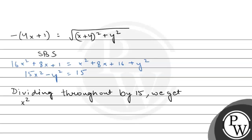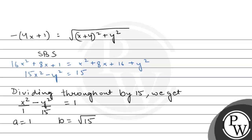Now dividing throughout by 15 we get x²/1 − y²/15 = 1. So 15 and 15 cancel out, giving x²/1 minus y²/15 equals 1. If we check, this is our hyperbola equation where a equals 1 and b equals √15. We have created the hyperbola equation and solved the question. Hope you all understand well — best of luck, thank you.